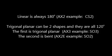Linear is always 180 degrees. Trigonal planar can be two shapes and they're all 120 degrees. The first is trigonal planar, the second is bent.